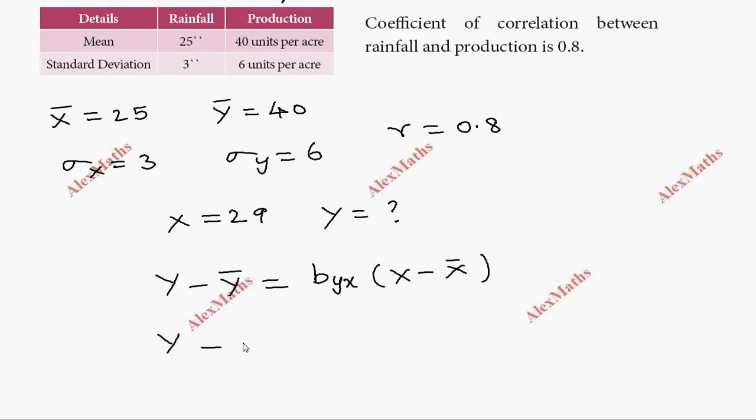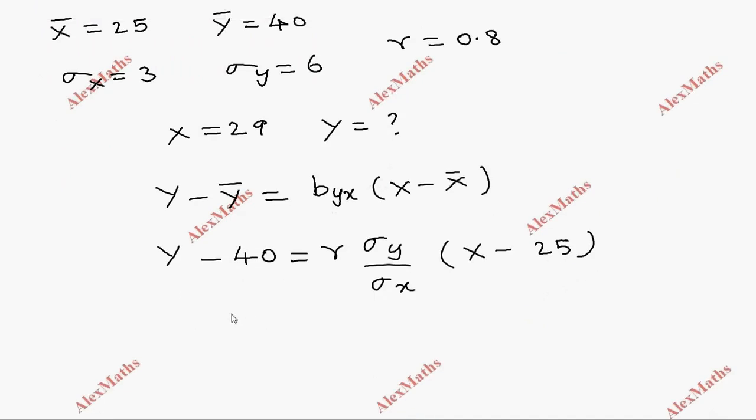So y minus ȳ equals 40, and r times σy by σx. That's x minus x̅ equals 25. So y minus 40 equals r, which is 0.8, this is 6 and this is 3, into x minus 25.